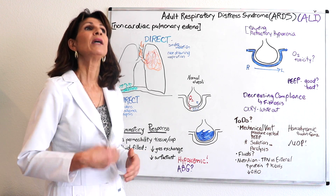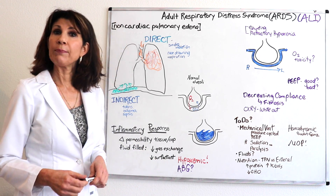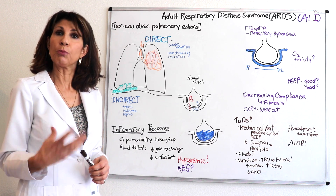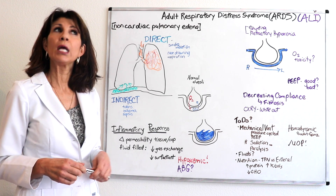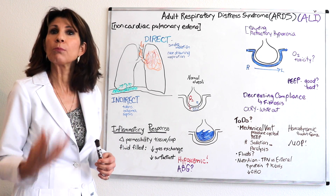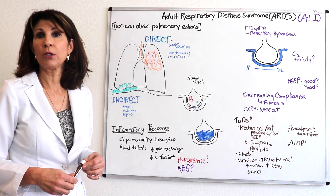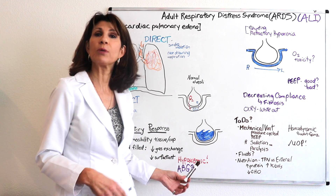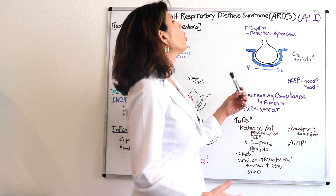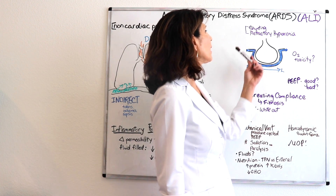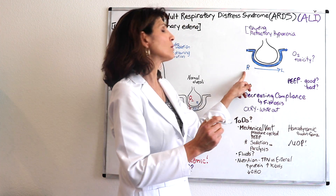The fluid in the alveoli also blocks surfactant secretion and dilutes whatever surfactant remains, causing progressively worsening hypoxemia. Initially, the patient responds to hypoxemia by breathing rapidly to increase rate and depth of ventilation. This produces a respiratory alkalosis, so in the early phases we have respiratory alkalosis with hypoxemia.